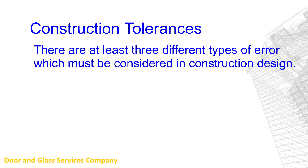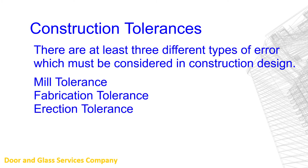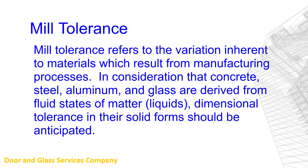There are at least three different types of error which must be considered in construction design. Mill tolerance refers to the variation inherent to materials which result from manufacturing processes. In consideration that concrete, steel, aluminum, and glass are derived from fluid states of matter, which are liquids, dimensional tolerance in their solid forms should be anticipated.